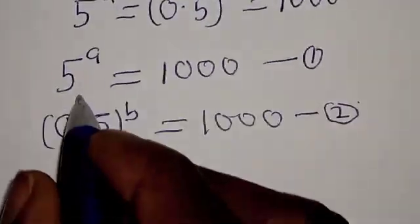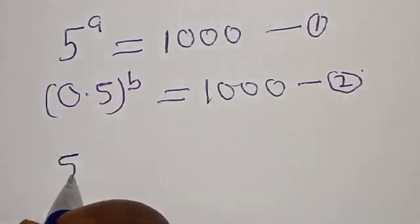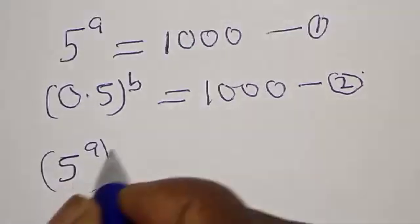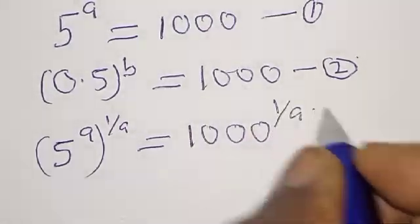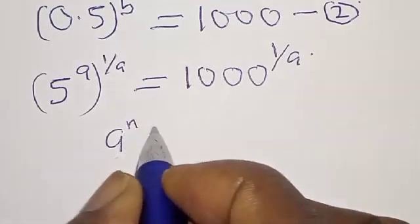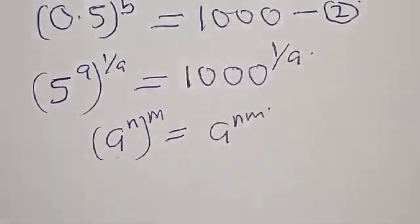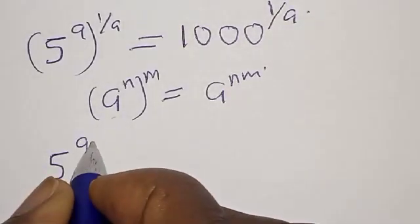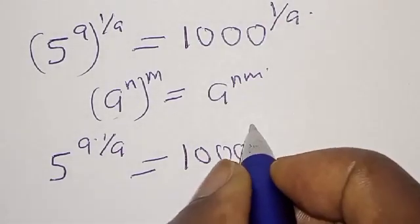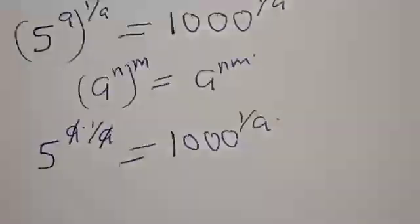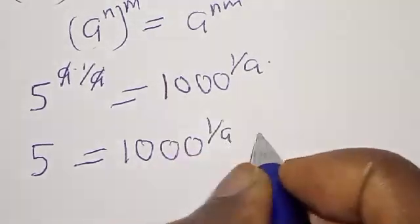From equation 1, let's multiply the exponents of both sides by 1 over a. That is, we have 5 raised to power a multiplied by 1 over a is equal to 1000 raised to power 1 over a. If you have a raised to power n, this one will cancel this, then 5 is equal to 1000 raised to power 1 over a. Let's call this equation 3.